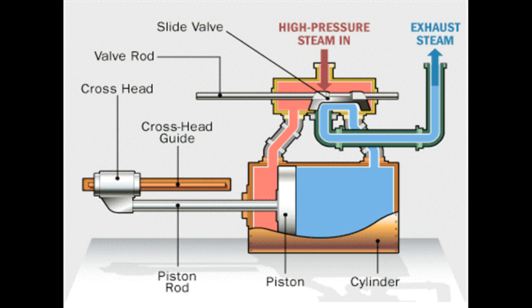This explains two things about steam locomotives. First, it explains why they have to take on water at the station — water is constantly being lost through the steam exhaust. Second, it explains where the choo-choo sounds come from. When the valve opens the cylinder to release its steam exhaust, the steam escapes under a great deal of pressure and makes a choo sound as it exits.